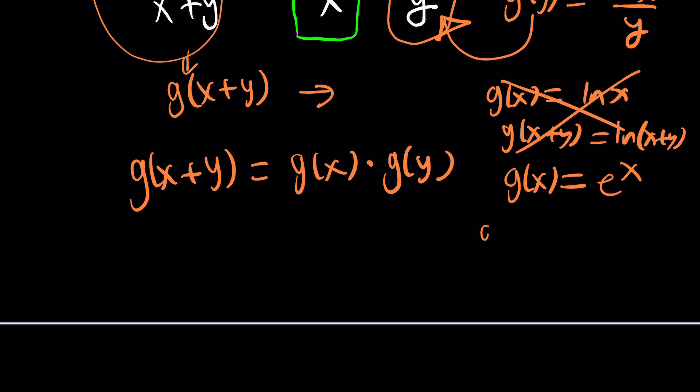e to the power of x. Then, g of x plus y is going to be e to the power of x plus y. So, what? This can be split up. So, there you go. Well, the exponential function takes the sum and turns it into a product so that you can split it out. In other words, g of x needs to be exponential.